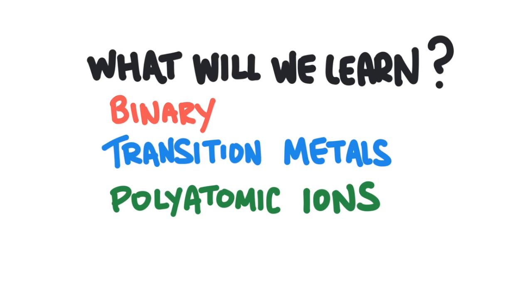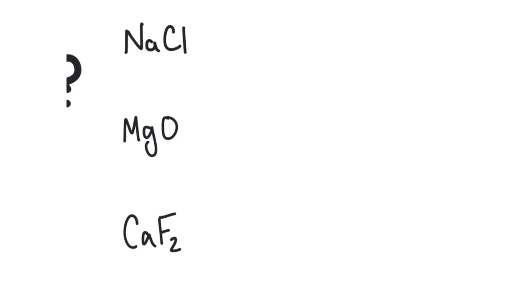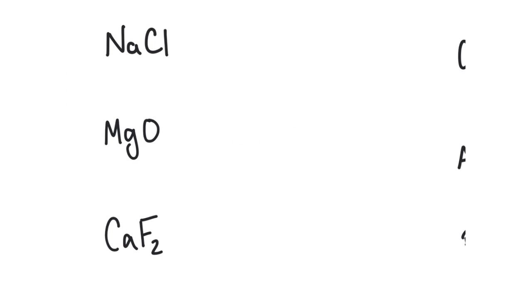In an ionic compound, we have cations and anions — positively charged ions and negatively charged ions — sticking together. In general, this is a compound formed when a metal bonds with a non-metal. To follow along, you'll want to have a periodic table handy so you can look up the names of the different elements.